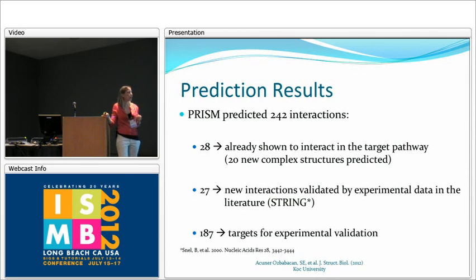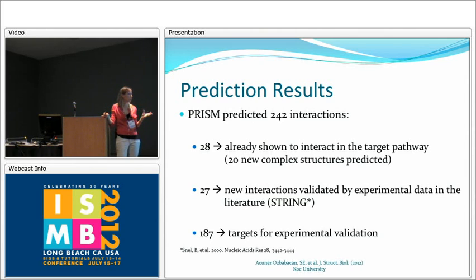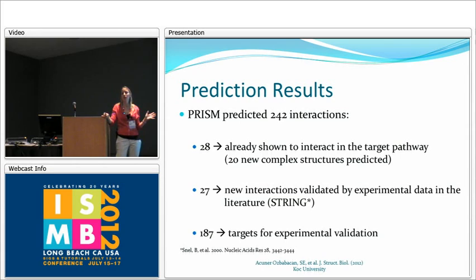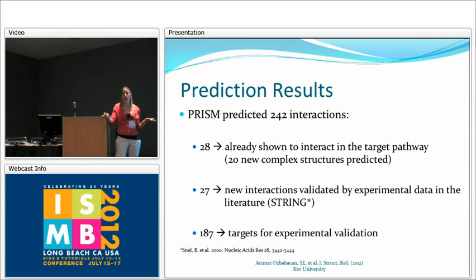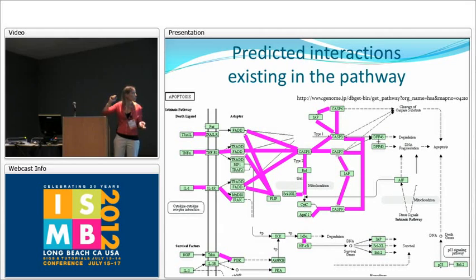Overall, PRISM predicted 242 interactions. Of these, 28 were already on the map, with 20 complex structures newly predicted, and 27 new interactions were also predicted. When we checked the literature, we could validate interactions using the STRING database, and the remaining predictions can be targets for experimental validation in future studies.